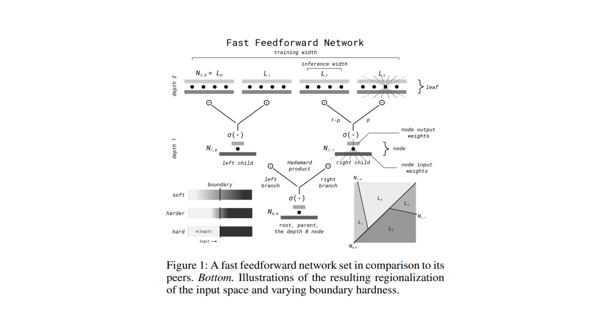So what's the secret behind this? Fast feedforward networks can use as little as 1% of layer neurons for inference in vision transformers, yet they preserve 94.2% of predictive performance.